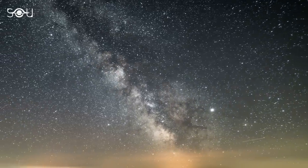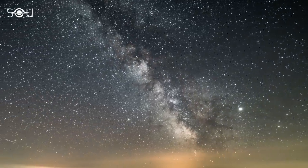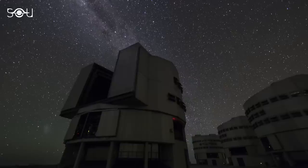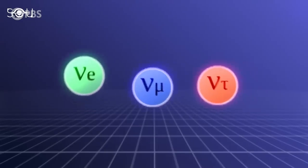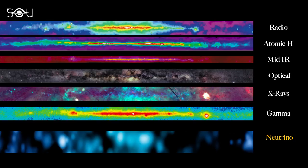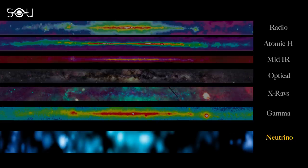This remarkable finding marks the first time astronomers have been able to create a new map of our galaxy, not through traditional light observations but by capturing these elusive matter particles. As we expand our understanding of the Milky Way's portrait from gamma rays to radio waves, this new view depicting our galaxy in neutrino light has added a previously unseen dimension to our cosmic view.